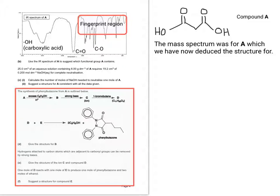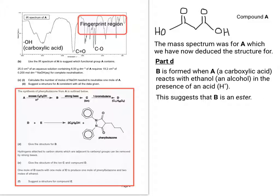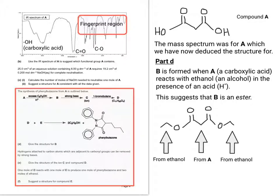So it says give the structure for B. So it says B is formed when A, which is a carboxylic acid, reacts with ethanol, which is an alcohol. So this would suggest that B is an ester. So because A is a dicarboxylic acid, I'm going to suggest that you have 2 ethanols and 1A that come together to make an ester like that.